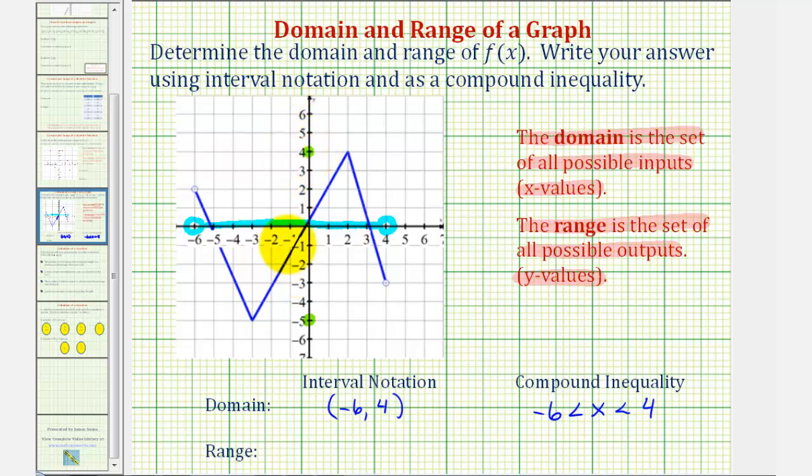And therefore, the range is the closed interval from negative five to positive four. So using interval notation, we would now use square brackets to make sure that the endpoints are included. So square bracket negative five comma four.